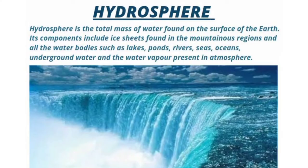Hydrosphere. Hydrosphere is the total mass of water found on the surface of the earth. Its components include ice sheets found in mountain regions, oceans, and all the water bodies such as lakes, ponds, rivers, seas, and oceans, as well as underground water and the water vapor present in the atmosphere.